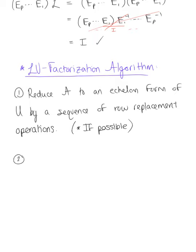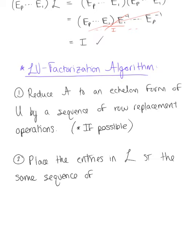Step two: place the entries in matrix L — our lower triangular matrix — such that the same sequence of row operations reduces L to the identity matrix. In summary, we reduce matrix A to the echelon form of matrix U by a sequence of row replacement operations if possible, then place the entries into matrix L such that the same sequence of row operations reduces matrix L to the identity matrix.